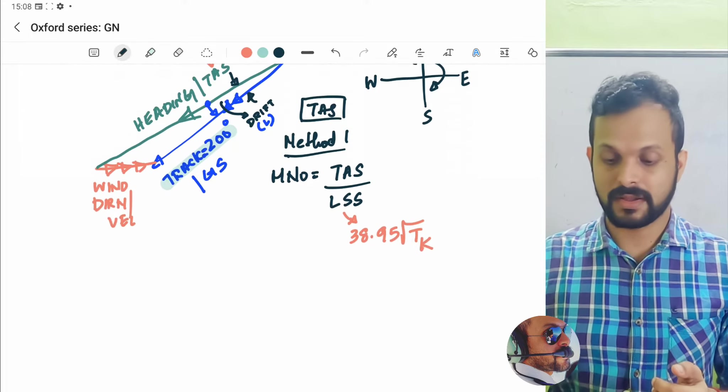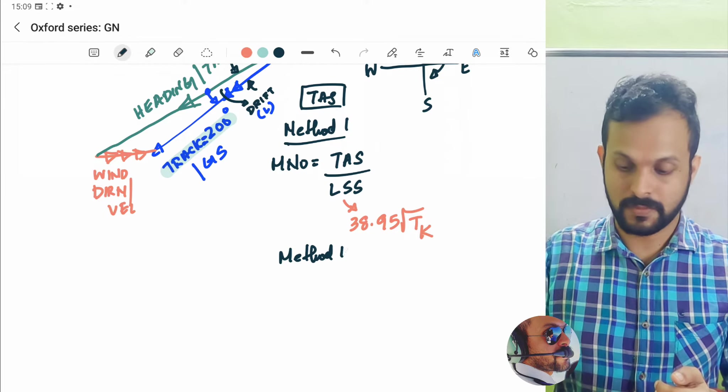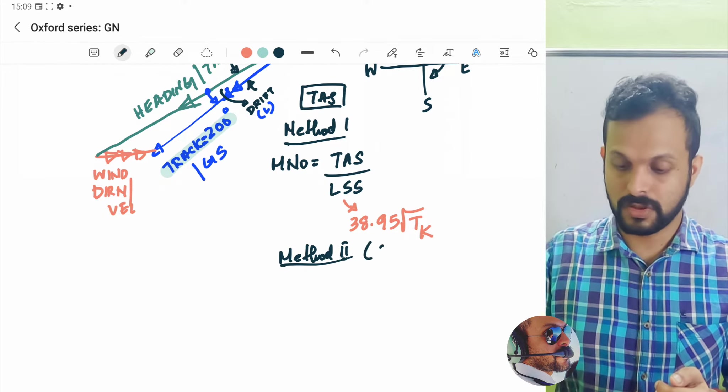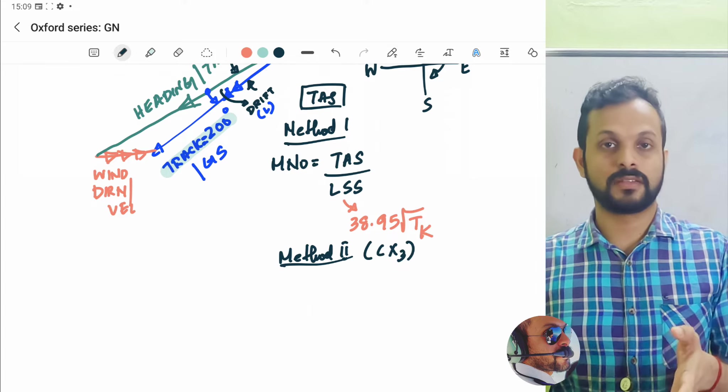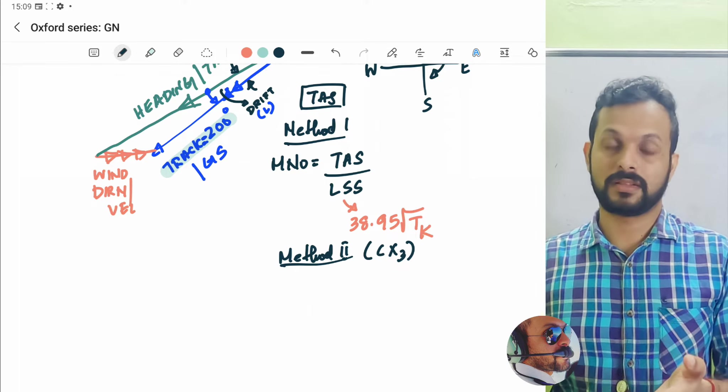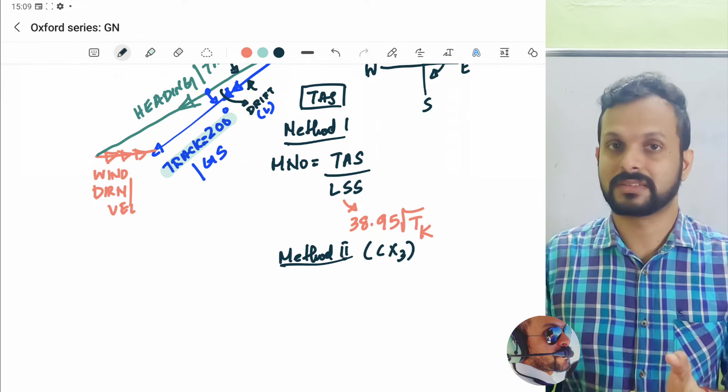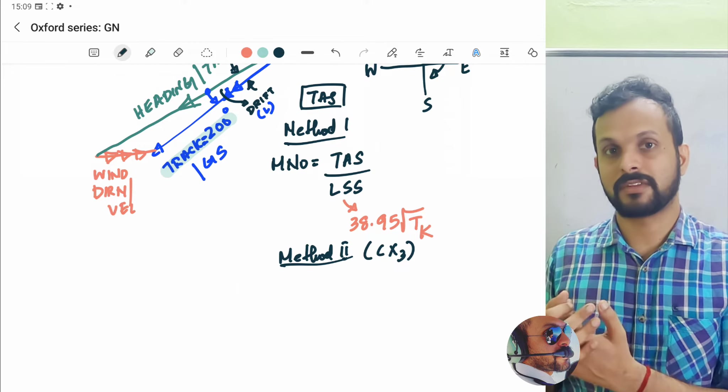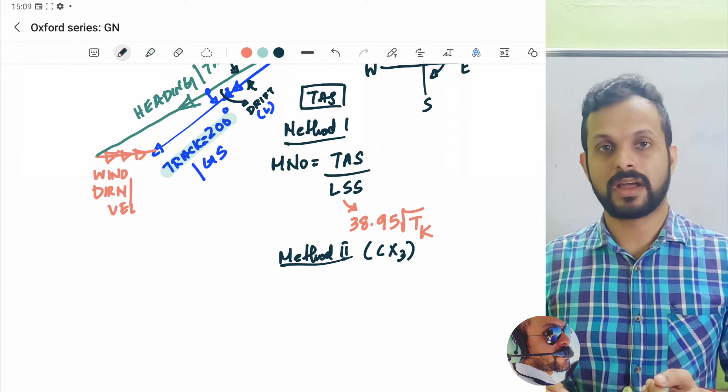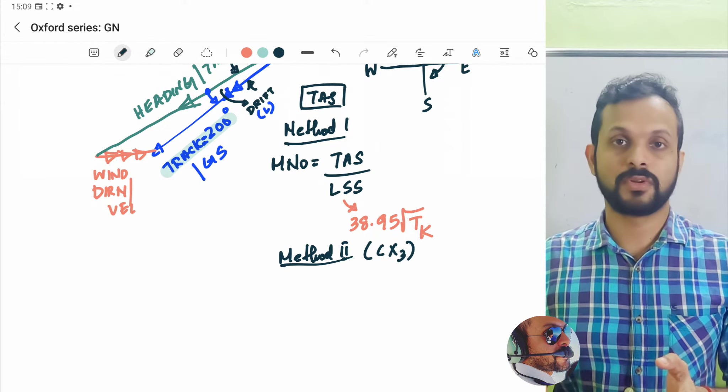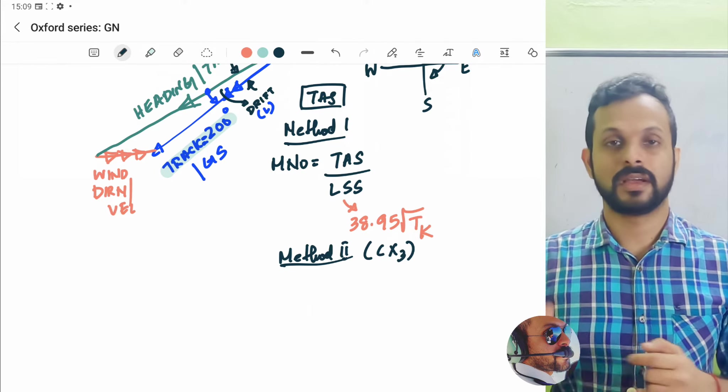And as I said, we will be looking at method number two which is using your CX3, the second method using your navigation computer. Now, one thing which you need to keep in mind is the answer which you get through your manual calculation and that through the CX3 could be different, not way different, but they would be different based on some of the values won't be exactly the same. I highly recommend you to use the values from CX3 because from what I have seen, that goes more in line with the options given in the question.